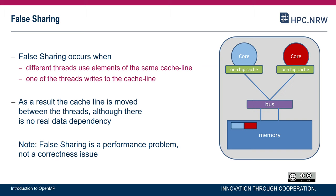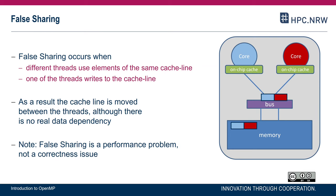This is just a performance problem, not a correctness issue. Assume we have an array in main memory, and one thread is going to load A[0] while the other loads A[1], and both perform an update - for example, because we have a parallel for loop with a chunk size of 1. The first thread loads the cache line and performs the update; the second thread has to load the same cache line and perform its update, and so forth.